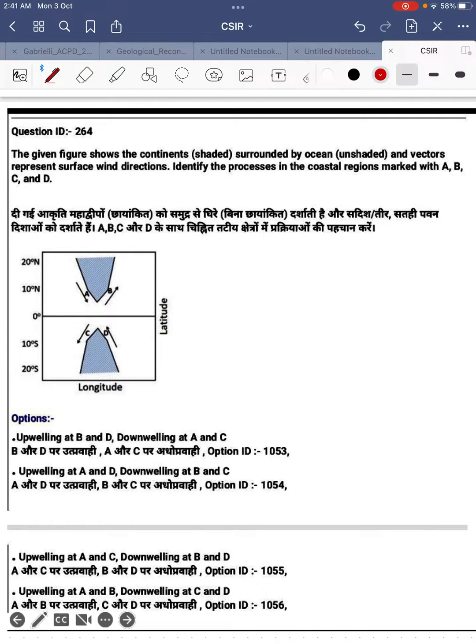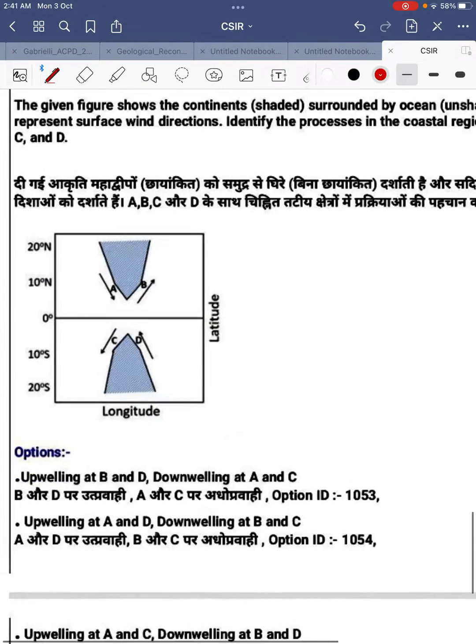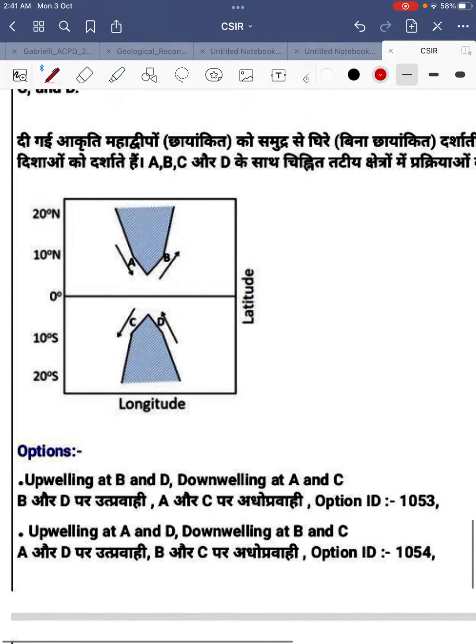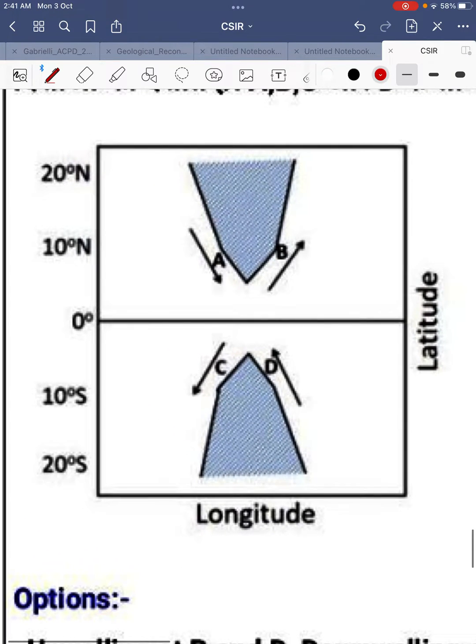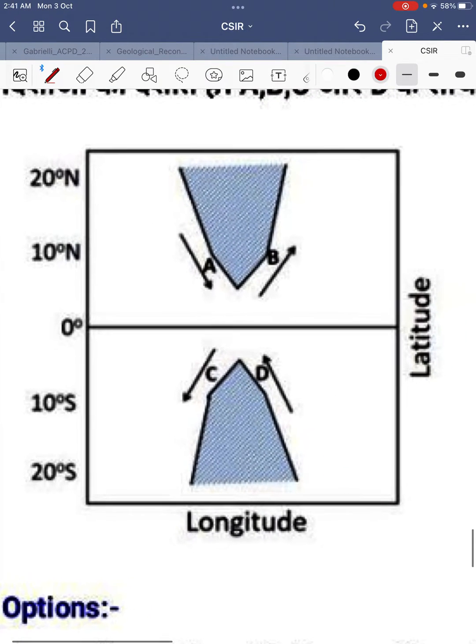We have to identify the coastal regions marked by ABCD. We need to check whether we have upwelling or downwelling at ABCD. Now if you see this figure, this is latitude, and here we have longitude. These are ABCD.